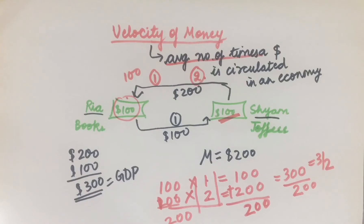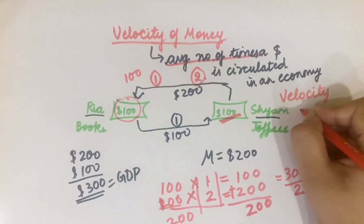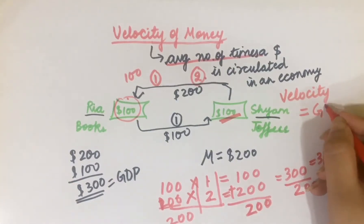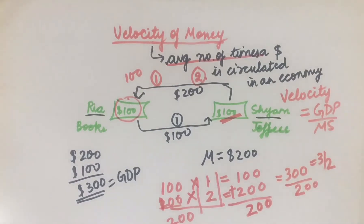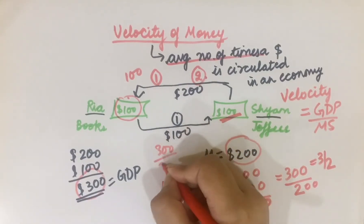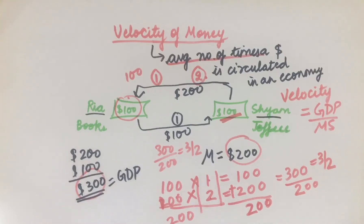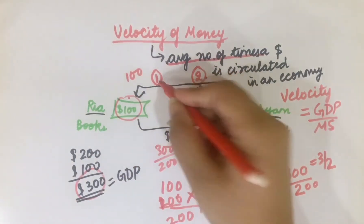If you don't understand that intuitive calculation, understand this formula: Velocity = GDP divided by Money Supply. The GDP of this economy is $300 and the money supply is $200. So 300 divided by 200 equals 3/2 — that is the average number of times one dollar is circulated in the economy.